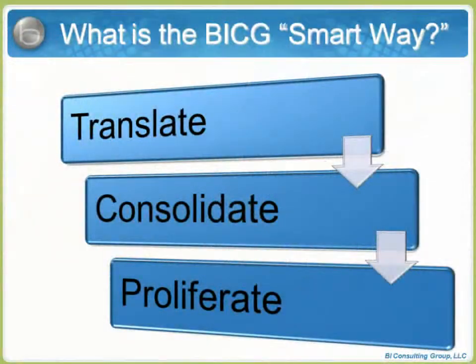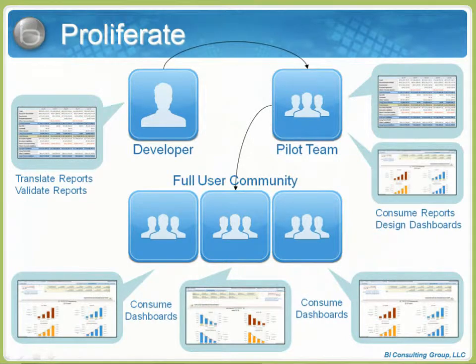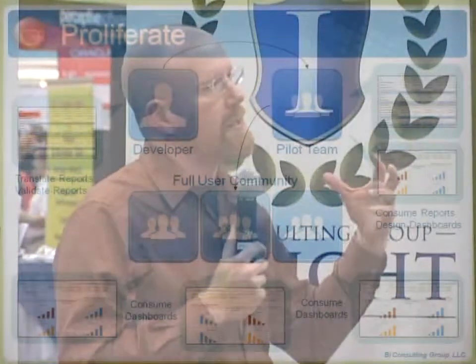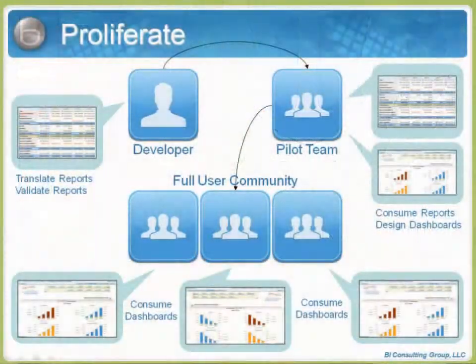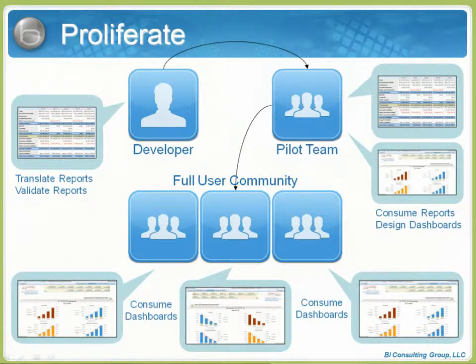When we get to the proliferate stage, we need to back up a little and understand how we got there. During the translate stage, the translation utility is really done by just a small subset of users — not even really users, but developers, possibly just one developer. That developer is going to translate the set of BQI reports fed into the translation utility and then validate them, making sure that the numbers match from one system to the other. When we get to the consolidate phase, we're really suggesting that we get a pilot team together of users that we know are going to be strong evangelists for moving from IR to OBIE. What they're going to do is start to consume the reports that we built in the translation phase, because we want to understand, now that we've got these reports into OBIE, does it make sense for these reports to exist the way that they do?